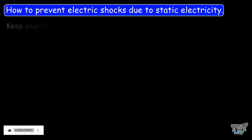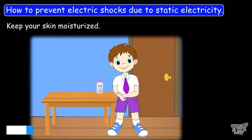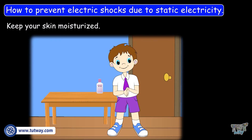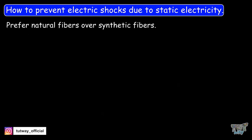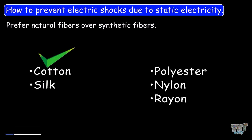Another tip is keeping your skin moisturized, as dry skin is more prone to getting static electricity shocks. So we should keep our skin well hydrated with moisturizers in order to prevent getting small electrical shocks. We should also wear natural clothes made of natural fibers like cotton, because synthetic fibers like polyester and nylon are more prone to the development of static charge and should be avoided.